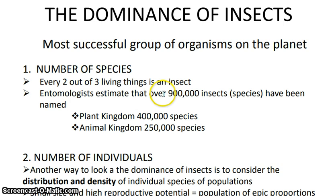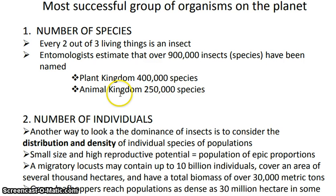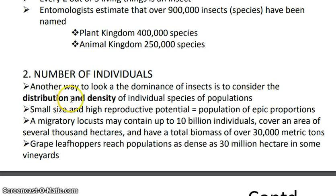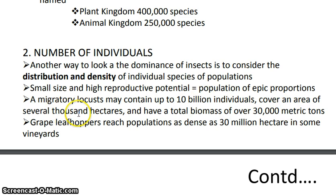Approximately nine lakh insect species have been named by entomologists, while in the plant kingdom four lakh species are named, and in the animal kingdom two lakh fifty thousand species are named. Insects are very dominant because they have higher distribution and density of individual species. A migratory locust swarm may contain up to 10 billion individuals, cover several thousand hectares, and have a total biomass of over 30,000 metric tons.